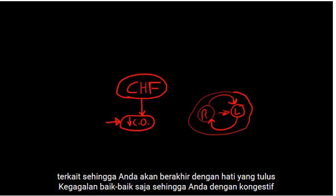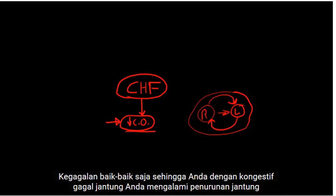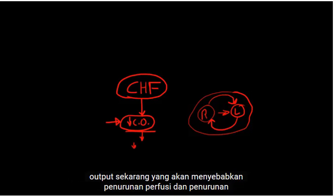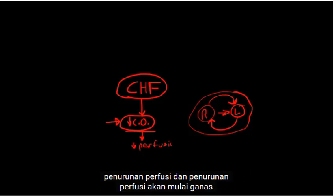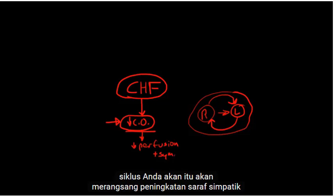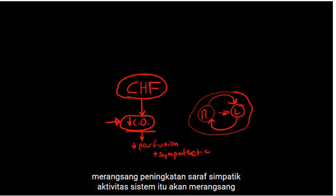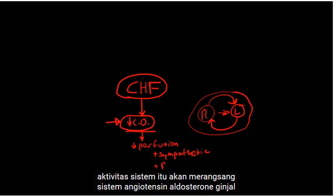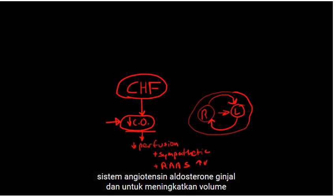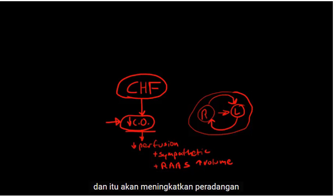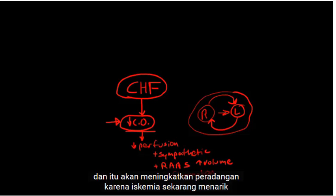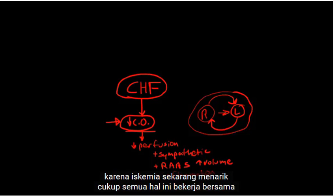With congestive heart failure, you have decreased cardiac output. That's going to cause decreased perfusion, and the decreased perfusion is going to start a vicious cycle. It's going to stimulate increased sympathetic nervous system activity. It's going to stimulate the renin-angiotensin-aldosterone system in order to increase volume. And it's going to increase inflammation because of ischemia.